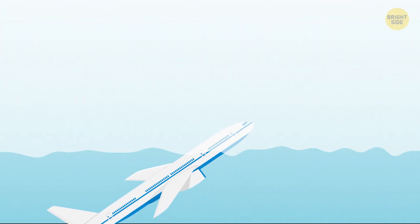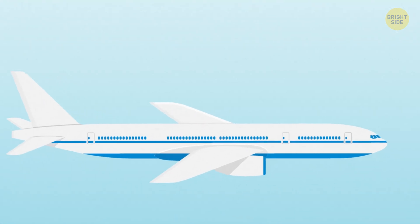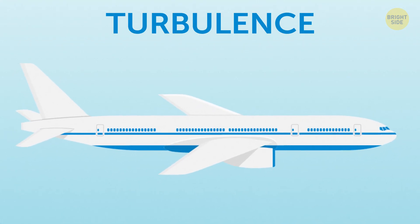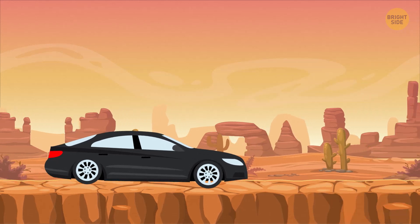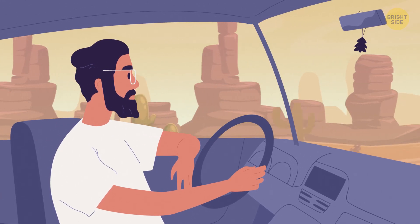When the plane goes through layers of air of different density, it can start vibrating. This is what we know as turbulence. You could compare it to a car driving on a bumpy road. You might be angry that the road is bad, but you don't think your life is at risk, right?